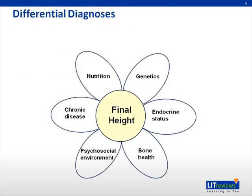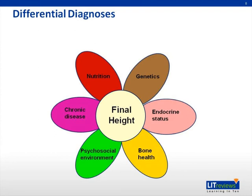Before proceeding with taking a useful history and performing an effective physical examination, you need to first be aware of the differential diagnoses for short stature. Broadly speaking, there are six main factors that determine what the final adult height of any individual will be, though there may be some overlap.